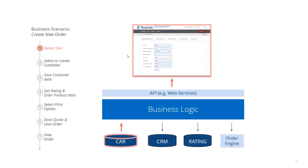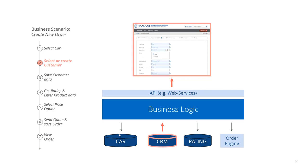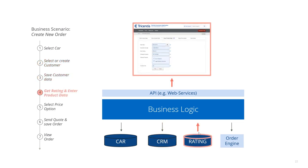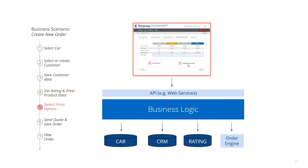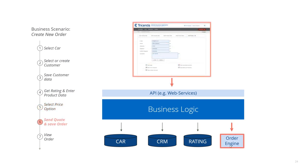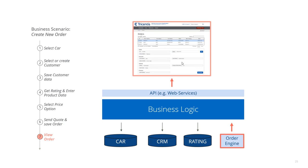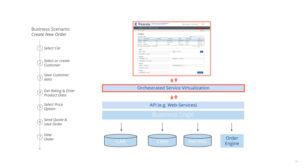What I'm going to show you is the following use case. We are team A, responsible for our website under test. This website uses different applications in the background via services: a car service to check vehicle data, a CRM service to get or write personal data, information about the rating of a specific person, and when selecting a product the result is stored in the order engine. When one of those underlying systems is not available, it blocks us from testing our website — and that's where OSV comes into place. OSV is what we call the man in the middle.